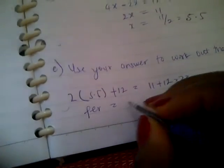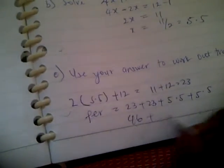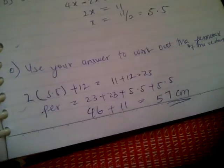So perimeter will be 23 plus 23 plus 5.5 plus 5.5. And this is 46 plus 11 to give you 57 centimeters. So that's the perimeter.